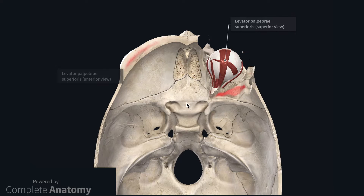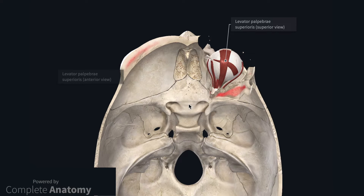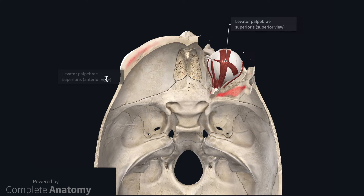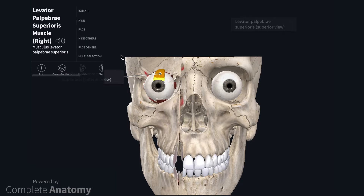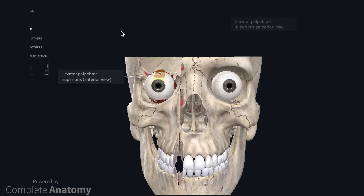With the extraocular muscles added to the model, it is possible to see the rough attachments of the muscles of the orbit. I will discuss levator palpebrae superioris first, as this muscle acts on the superior eyelid, not the eyeball. It arises from the apex of the orbit and the muscle inserts onto the upper eyelid. I will then fade levator palpebrae superioris so we can see superior rectus just inferior to it.